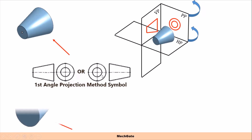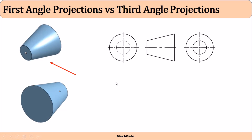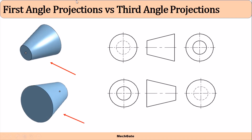Both symbols derived this way are used for first angle projection. When the object is kept in this orientation and we rotate the plane, the bigger side becomes nearer to the front view circle and the smaller side is away — this gives the first angle projection symbol. Similarly, by keeping the object in the third quadrant, you can derive the symbol for third angle projection. We avoid the hidden circle when drawing the side view, so we keep these two views as our symbol.